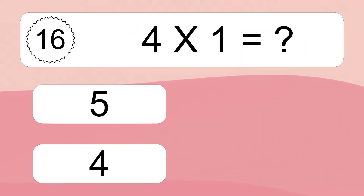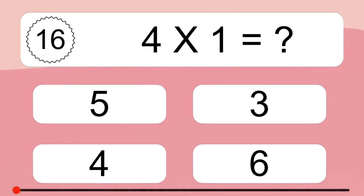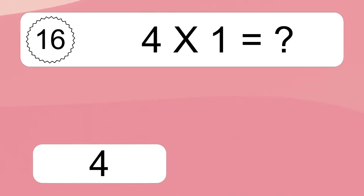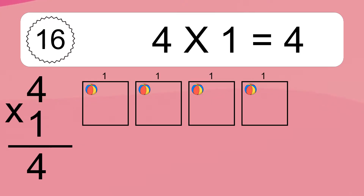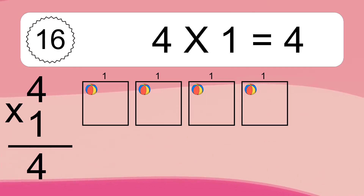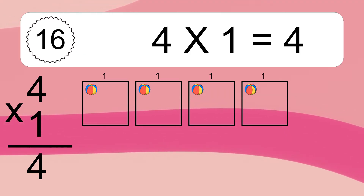4 times 1 equals what? 4 times 1 equals 4. We have 4 boxes, and each box has 1 colorful ball inside. If you count all the balls in all the boxes together, you will have 4 times 1 balls. This equals 4 balls.